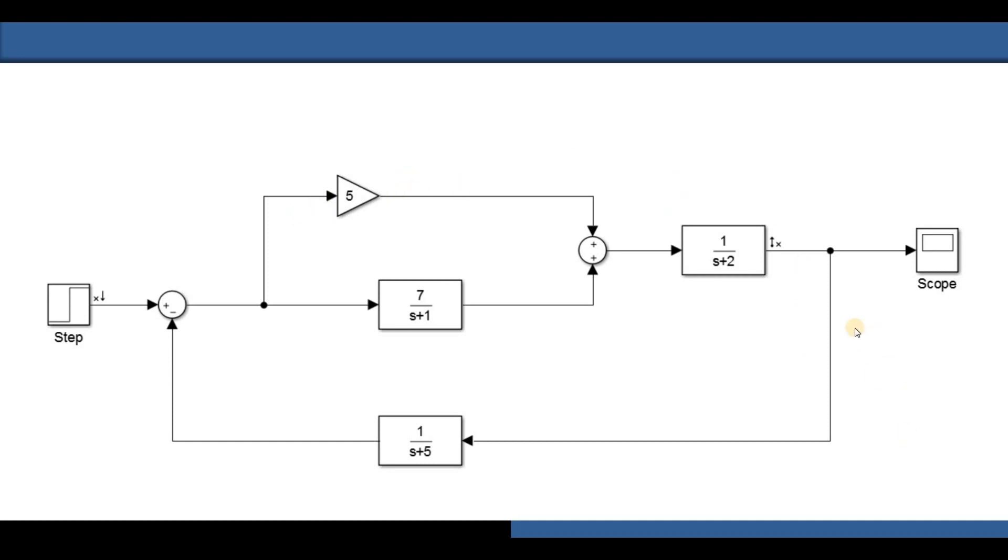Here we are considering a closed loop system. The transfer function of the closed loop is 1/(s+5). The open loop transfer function of the system is G = (5s+12)/(s²+3s+2), and the feedback H = 1/(s+5).